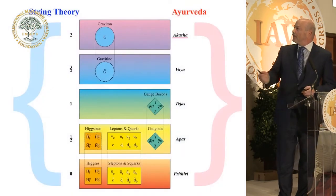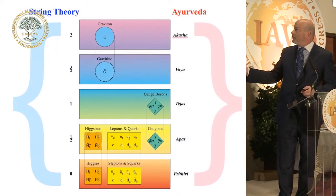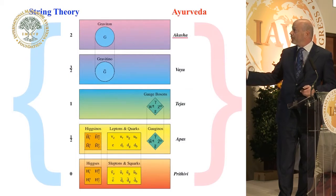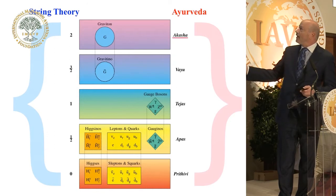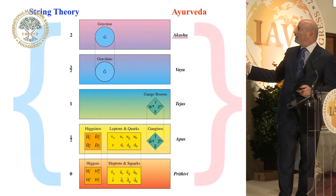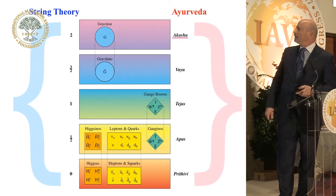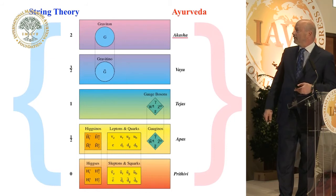If you look at the structure of the universe and the fundamental elements of the universe described by modern physics, in terms of these different spin types — from gravity all the way to the Higgs boson — these five have their direct correlations, direct correspondence in the language of the Veda, as the pancha mahabhutas: akasha, vayu, agni, jal, and prithivi.